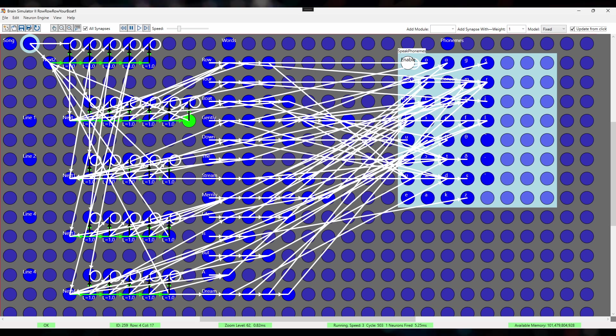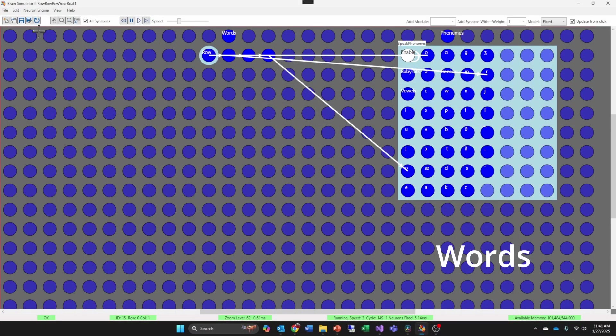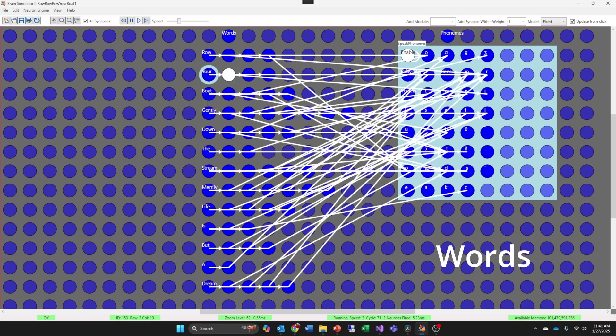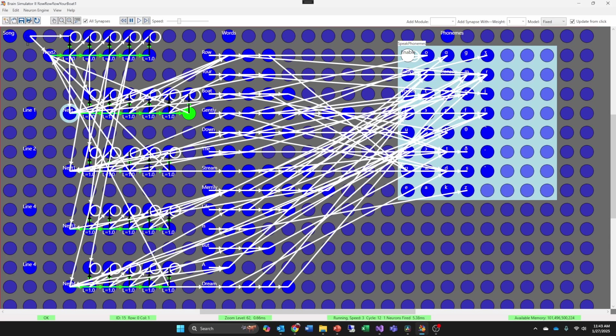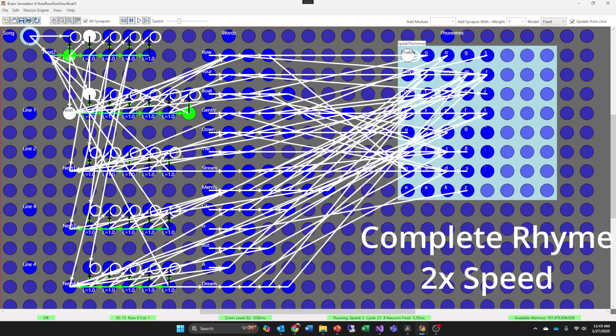Here's how this entire process might look in neurons as simulated in the Brain Simulator 2. There is a master sequence that calls the four individual lines, each of which calls individual words which go to the special neurons to generate the phonemes: row row row your boat gently down the stream merrily merrily merrily merrily life is but a dream.